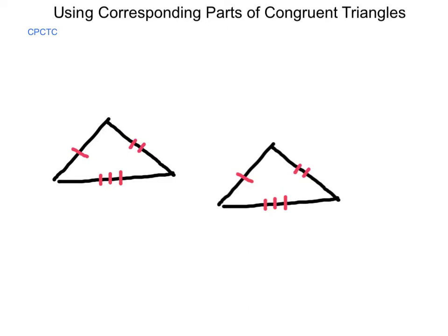Now that we've studied different ways of proving congruence of triangles using sides and angles, we're going to look at what it means to have corresponding parts of these congruent triangles.